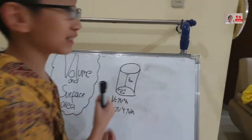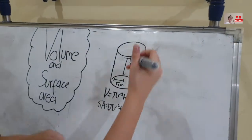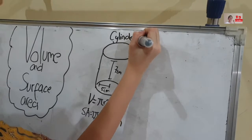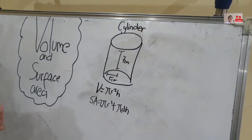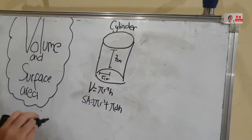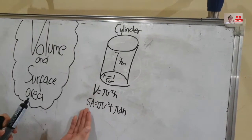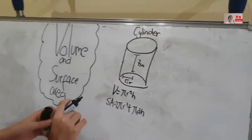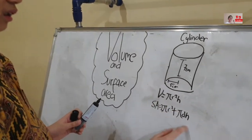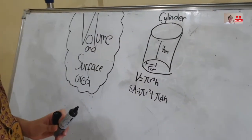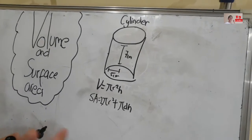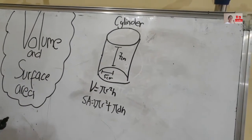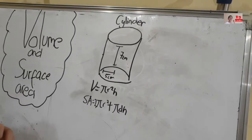Look at this — what is this? Yes, it is a cylinder. And we will try to solve the volume and surface area. Don't forget to remember these concepts, because they will be very useful when you are solving mathematical problems like this. Let's start.